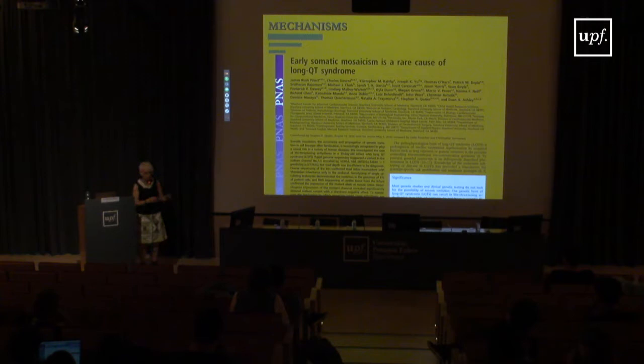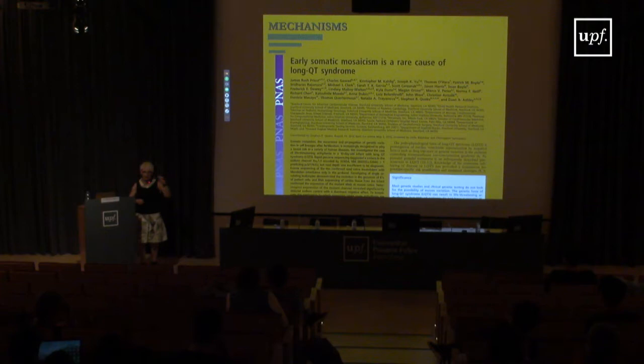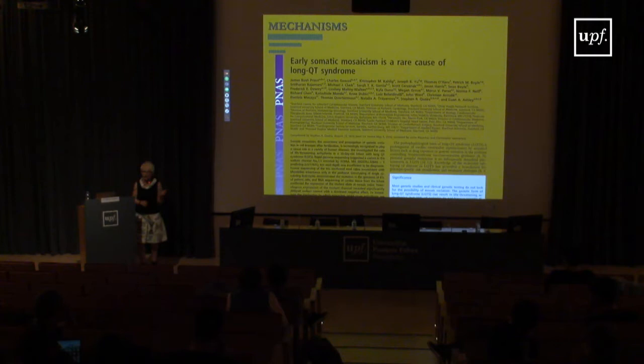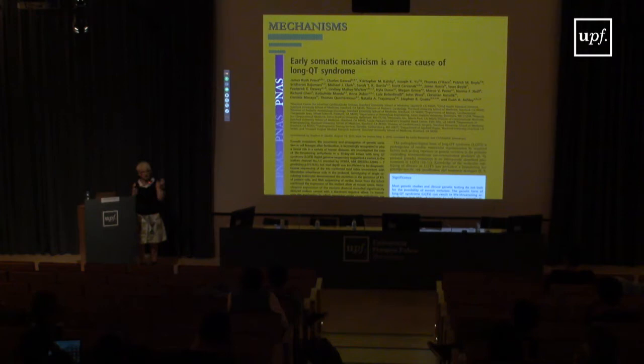It turned out one co-author at Stanford specialized in single-cell genome sequencing, and they discovered she is a mosaic person. A mosaic organism — human, plant, or animal — has different genetic makeup in part of its cells, as if they come from different sources.